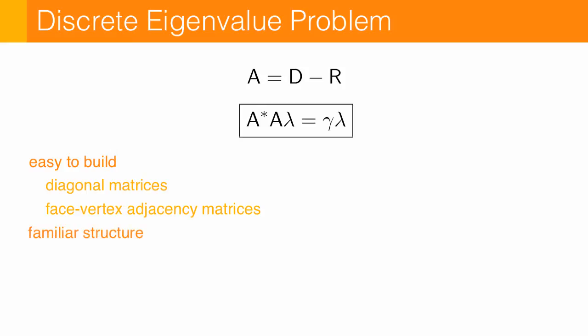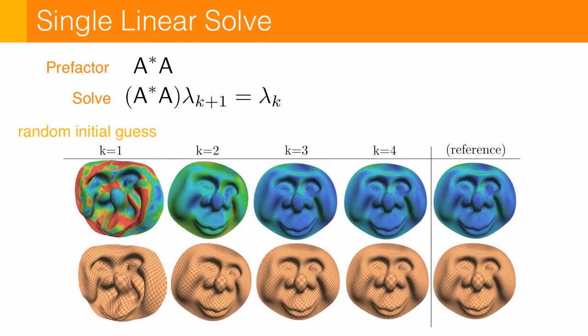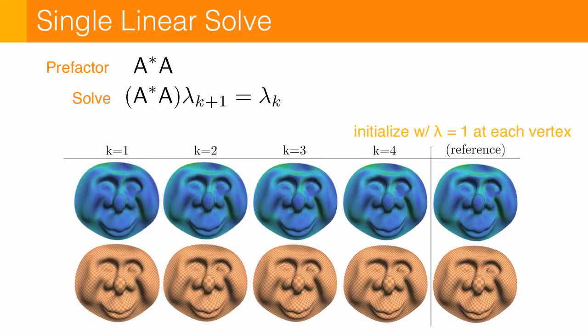And even though we have this eigenvalue problem to solve, what does this mean in practice? It just means we prefactor our matrix, and then we iteratively apply back substitution. And so even with a random initial guess, we may only need to apply a few iterations. Or if we're just slightly more intelligent and start lambda at the identity, we might need only a single iteration of back substitution. And so the overall cost is just something like a linear solve.